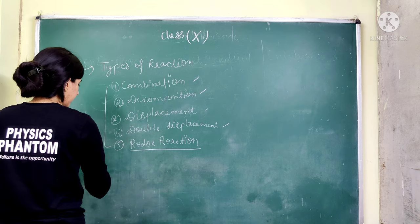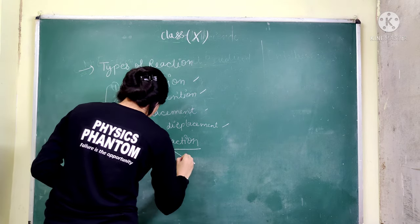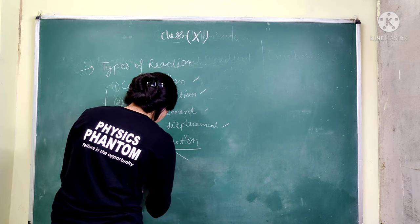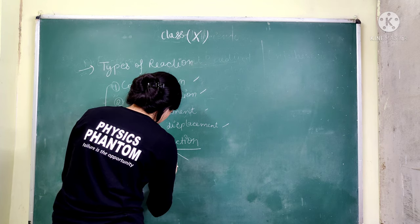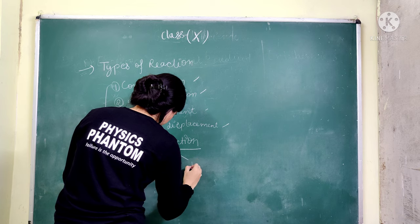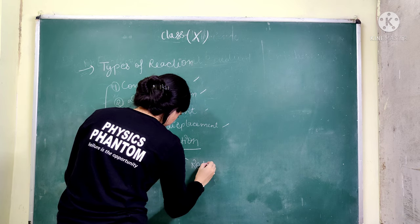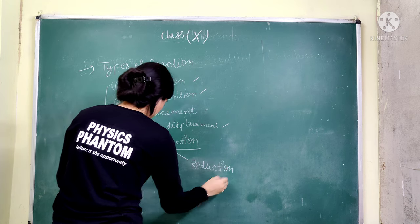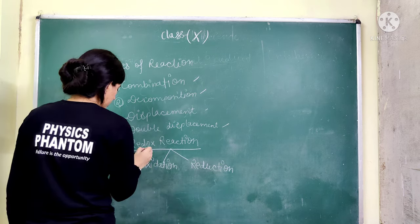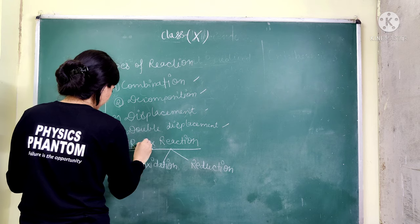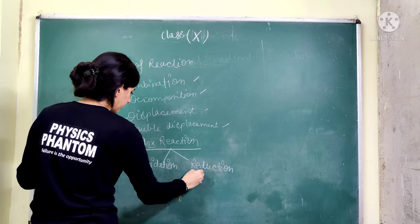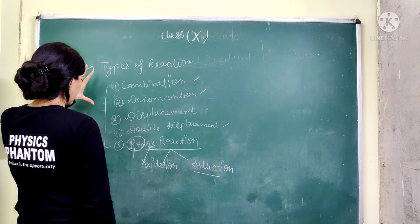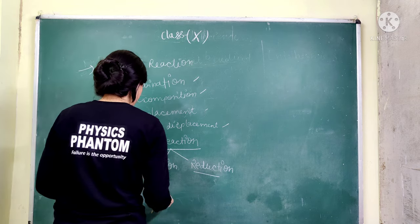There are a total of 5 listed types, but Redox Reaction is made up of two parts — Reduction and Oxidation. So in total, you have six types of reactions that you can name.